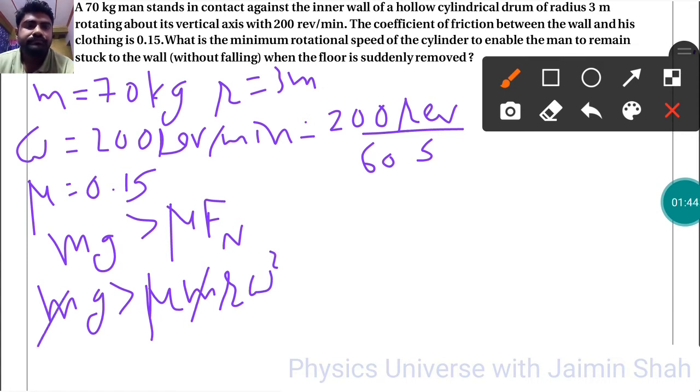From this equation, the minimum rotational speed that we have to find, so omega squared that we need to solve, omega squared is equal to g upon mu into R.